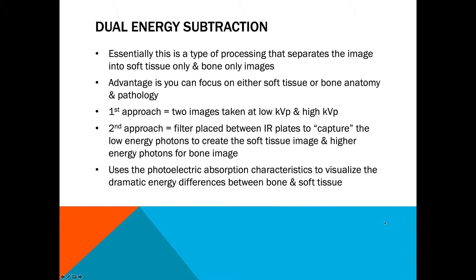Dual energy subtraction is a process that separates soft tissue from bone so that you can see only the soft tissue or only the bone in the image. The advantage is that you can focus on either soft tissue or bone anatomy and pathology, especially if it's hidden behind something. The first approach is to take two images — one at a low kVp and one at a high kVp in quick succession while the patient holds their breath. The second approach uses an actual filter placed between the IR plates to capture low energy photons for the soft tissue image, while high energy photons passing through the filter create the bone image.